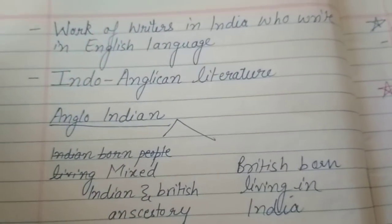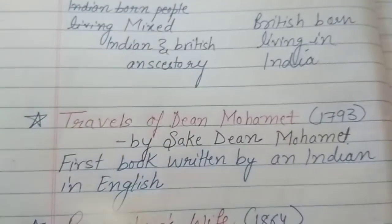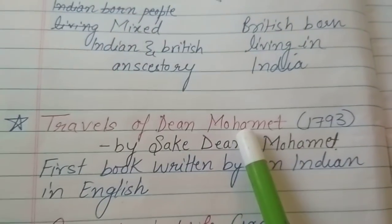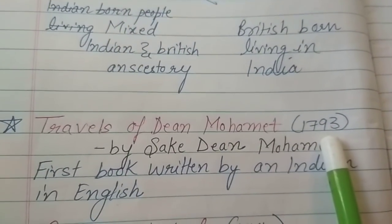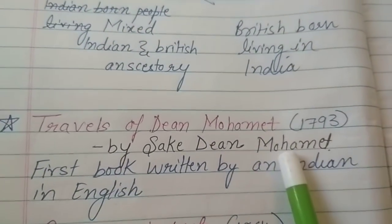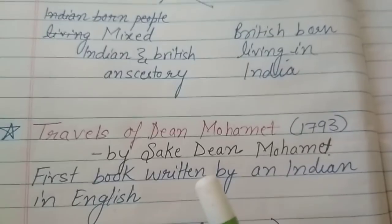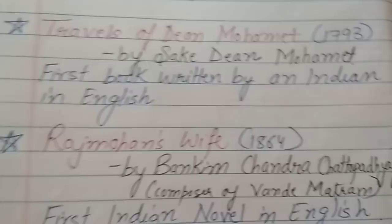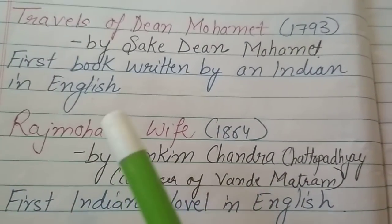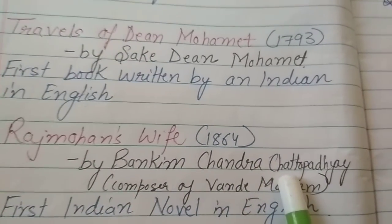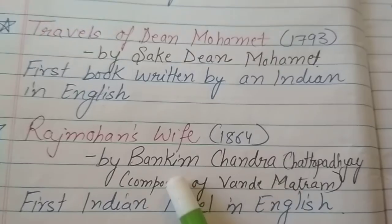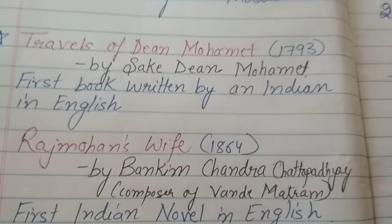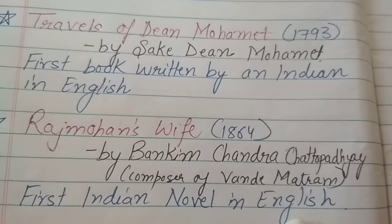The first book written by an Indian in English is 'Travels of Dean Mohamed', published in 1793 and written by Sake Dean Mohamed. The first novel written by an Indian in English is 'Raj Mohan's Wife', published in 1864, written by Bankim Chandra Chattopadhyay, who was also the composer of Vande Mataram. So 'Raj Mohan's Wife' was the first Indian novel in English.